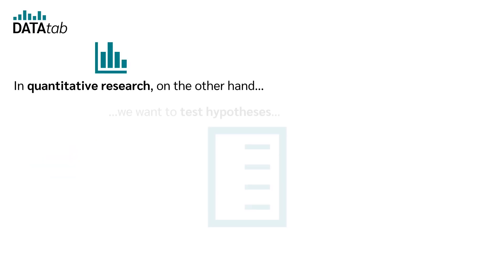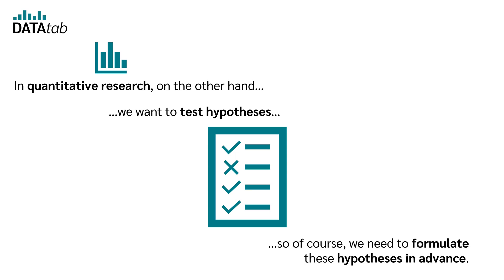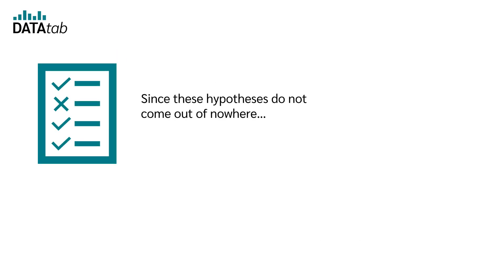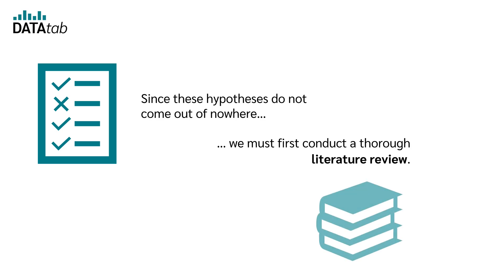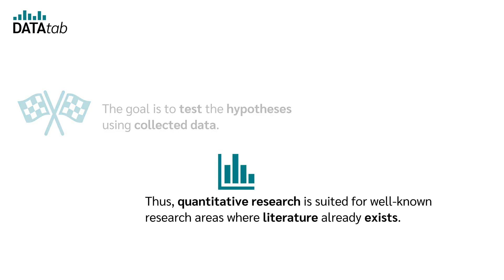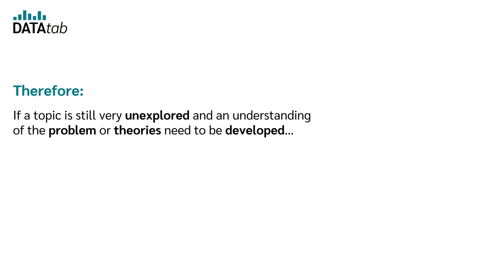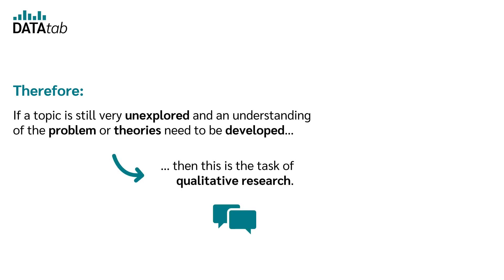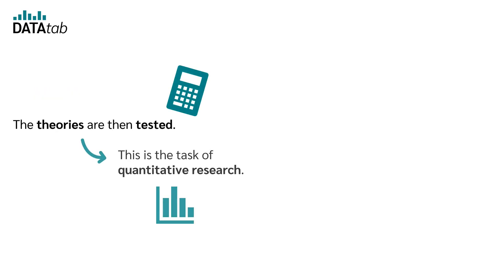In quantitative research, on the other hand, we want to test hypotheses, so we need to formulate them in advance. Since these hypotheses don't come out of nowhere, we must first conduct a thorough literature review. The goal is to test hypotheses using collected data. Thus, quantitative research is suited for well-known research areas where literature already exists. If a topic is still very unexplored and an understanding of the problem or theories needs to be developed, that is the task of qualitative research — theories are formulated. Those theories are then tested, which is the task of quantitative research.